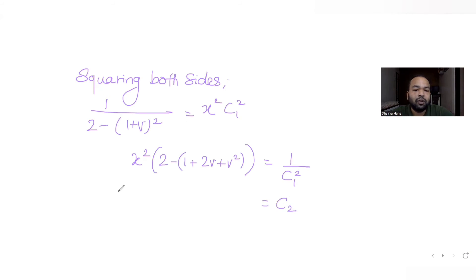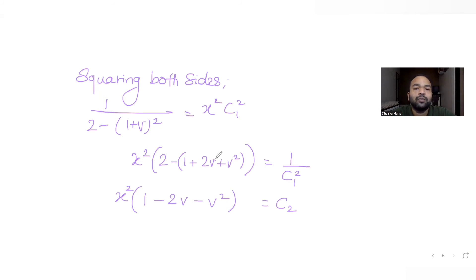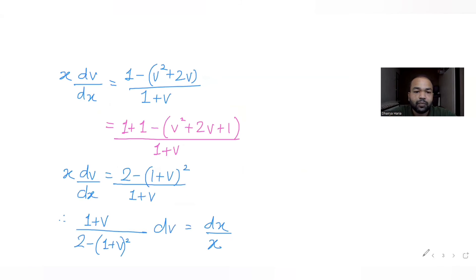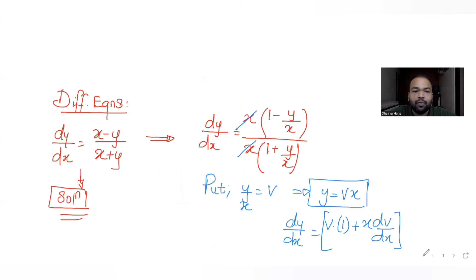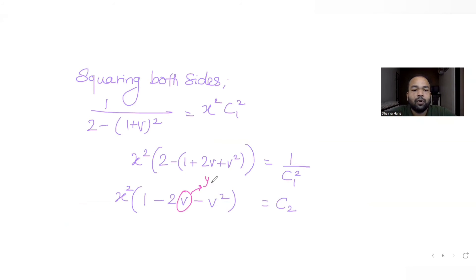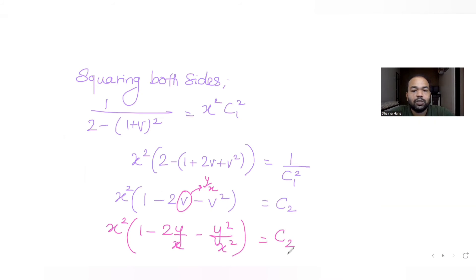So x²·[2 minus 1 minus 2v minus v²] equals C₂, which simplifies to x²·[1 minus 2v minus v²] equals C₂. Now resubstituting v = y/x: x²·[1 minus 2(y/x) minus (y/x)²] equals C₂, giving x²·[1 minus 2y/x minus y²/x²] equals C₂.